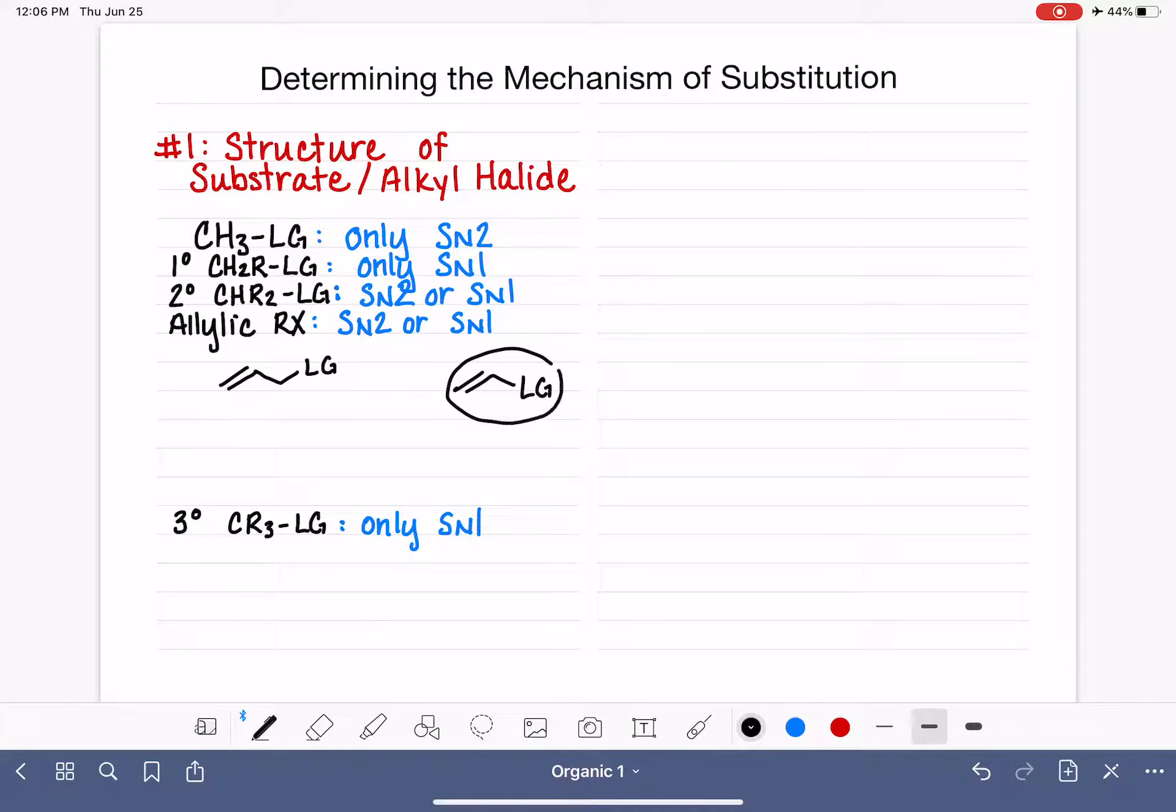So for example, this is not allylic. The leaving group cannot be directly attached to the double bond. Also, this is not allylic. The leaving group can't be too far away from the double bond.